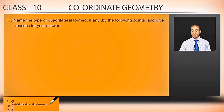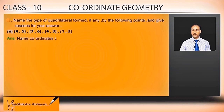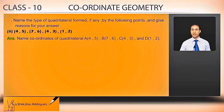The coordinates of quadrilateral ABCD are: A(4,5), B(7,6), C(4,3), and D(1,2). Name the coordinates of this quadrilateral — A is 4,5; B is 7,6; C is 4,3; and D is 1,2.